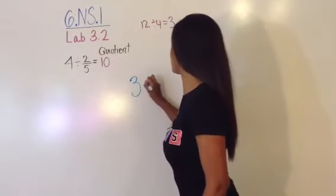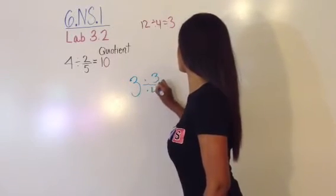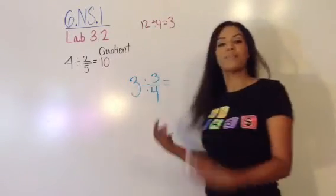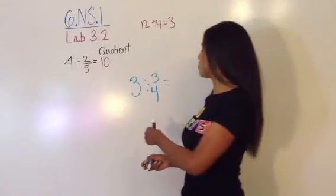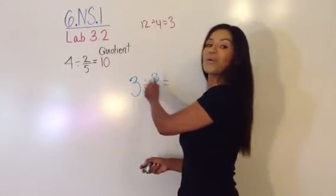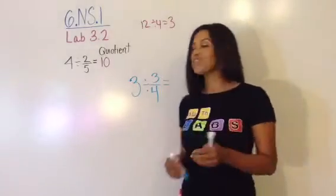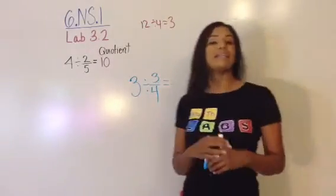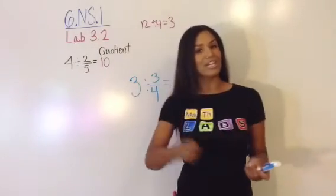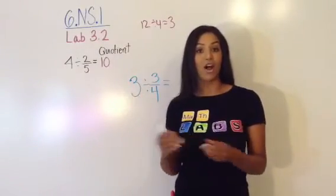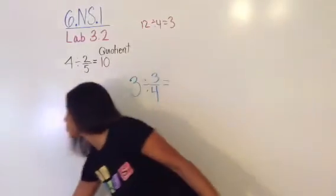It is 3 divided by 3/4. So let's just think about what that means first. How many groups of 3/4 go into 3. Right now, I want you to go ahead and draw your model and tell me what your quotient is by circling it, and then I'm going to have you raise your boards once I call the color of your board.